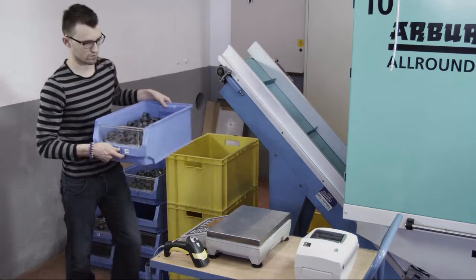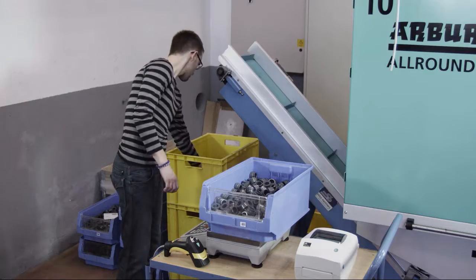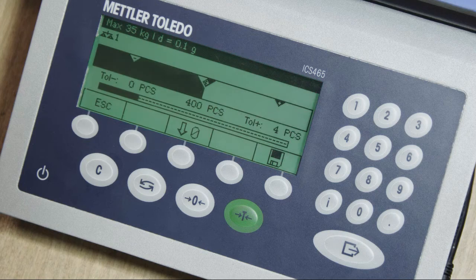The colored weight control system increases your productivity during manual check weighing processes and prevents losses, overfilling, and errors.